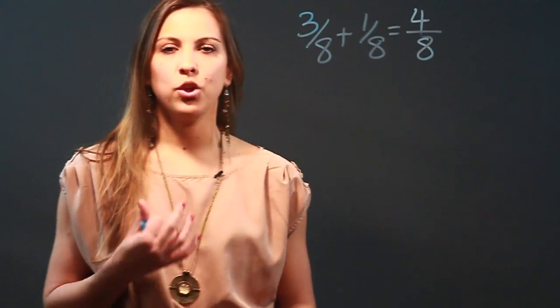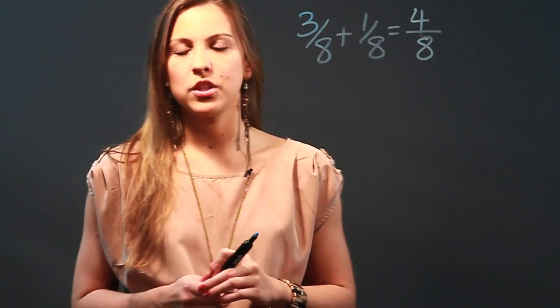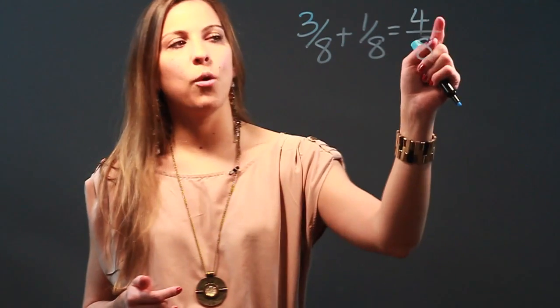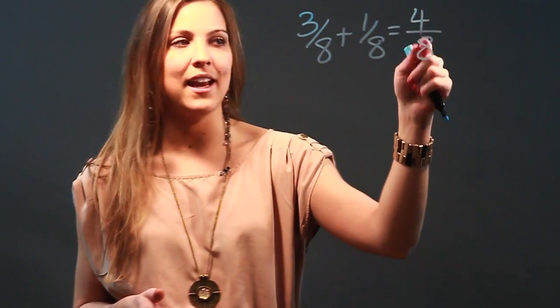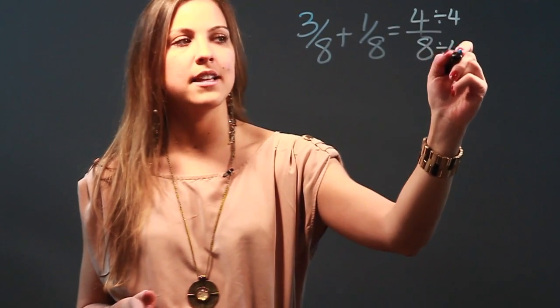So now I've got my sum but you want it to be in lowest terms. So when you're putting something in lowest terms, you're essentially looking for the greatest common factor. The biggest number that can go both into 4 and 8 and that number is 4. So I'm going to divide the numerator and denominator by 4.